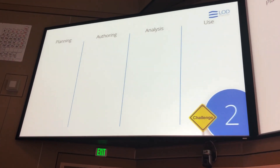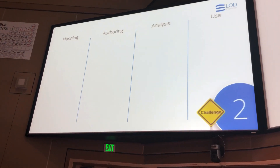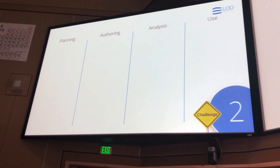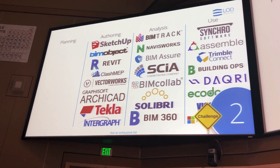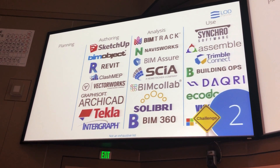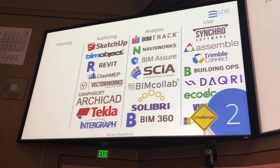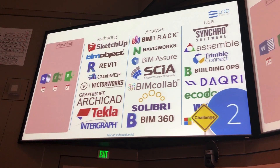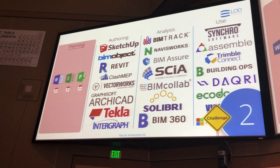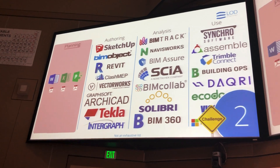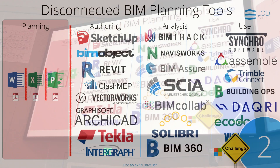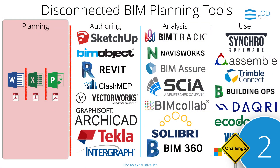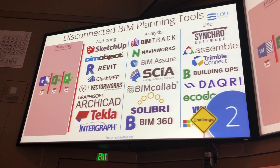On the technology side of things, we've got great software companies creating fantastic tools. Much like any other industry, there are buckets — you would expect planning tools, authoring, analysis, and use tools. But this is where we focus all of our tools — not an exhaustive list, and there's more every day. What do we do for planning? We use the traditional tools for planning. And not only are they not dedicated for BIM, they're also completely disconnected from each other and the rest of the workflow. So we're not doing ourselves any favours.